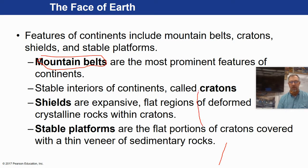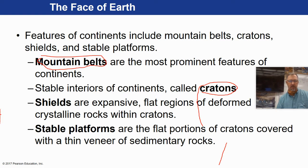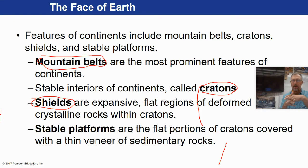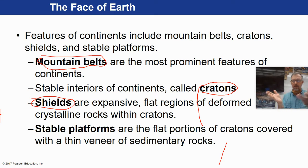The stable interiors of continents we call cratons. A shield is basically a huge expanse of a craton that is exposed — so you have this crystalline rock that is usually metamorphic because of heat and pressure. It's like you've dug up the foundation of the continents and moved away all the sedimentary rocks on top.